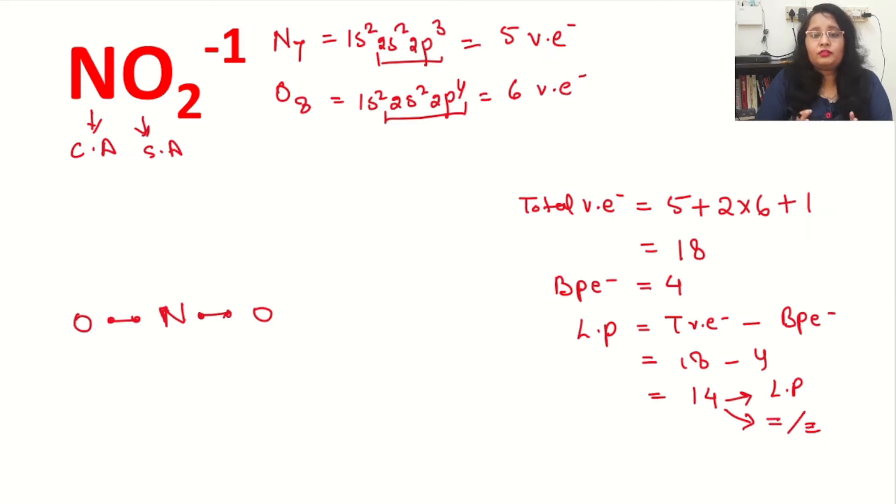Now start completing the octet using these 14 electrons. First we will fulfill the surrounding atoms, then we will come to the central atom. For oxygen, 2 electrons are already there. We will put 6 electrons, so 8 electrons are completed. On the other hand, this oxygen, 2 already there. We will put 6 electrons. So total we gave 6 plus 6, 12 electrons. So we will give 2 to the nitrogen.